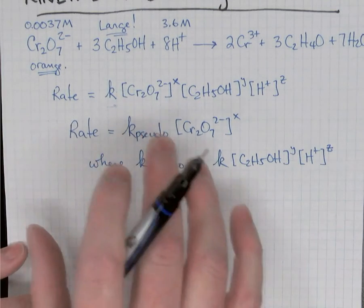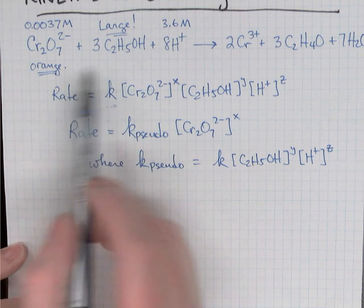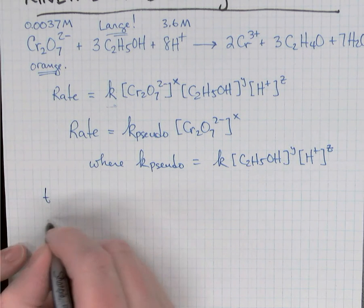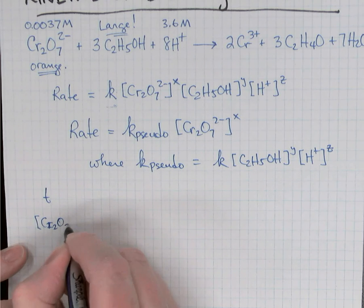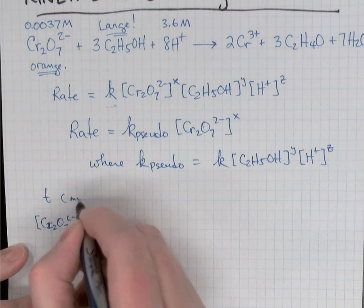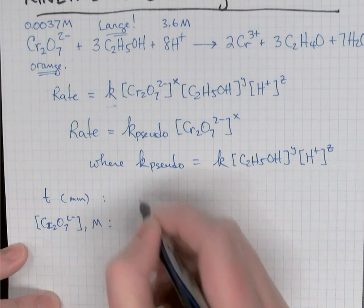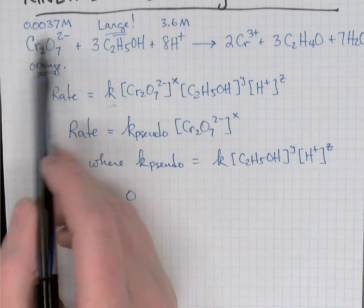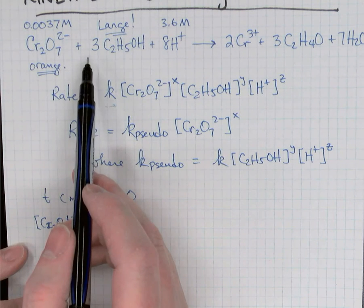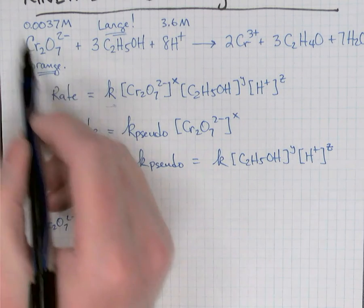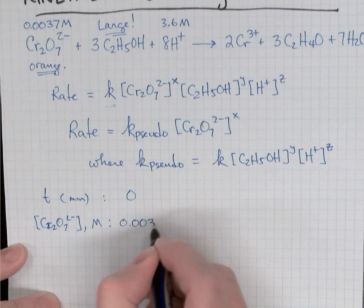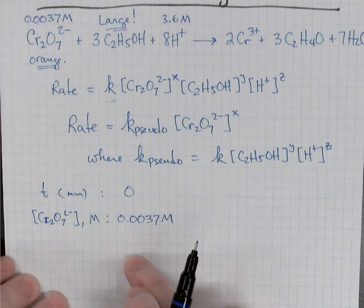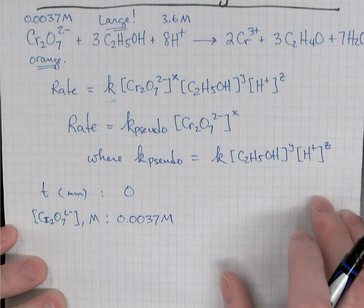So what we'll do is we took the, we started timing the reaction as soon as we added the alcohol to the dichromate. So we could say initially, if we think of a time and concentration of dichromate, we can set up a little table like this: time in minutes and concentration in molarity. At zero minutes, when we first added the alcohol, we added three milliliters of this to 200 milliliters of this. Technically there's a small dilution there, but it's such a small dilution we'll ignore it. We'll say that the dichromate starts off at a concentration of 0.0037 molarity. And now each group decided to measure the concentration by titration at different time intervals.